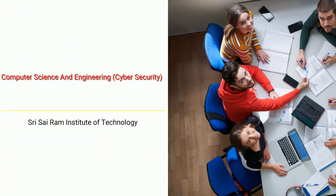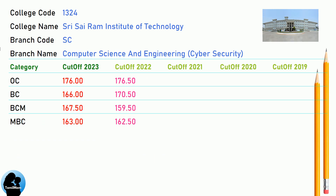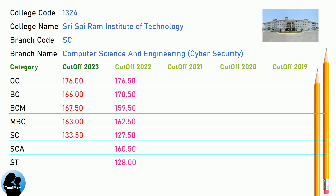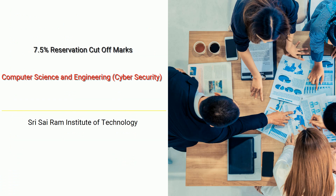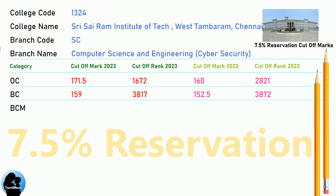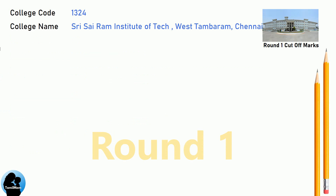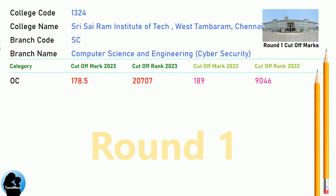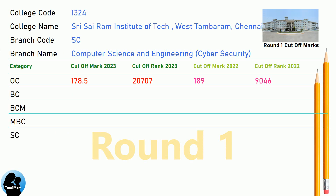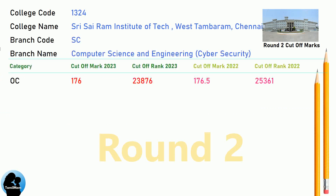BNA Cut-Off for Sri Sai Ram Institute of Technology in Computer Science and Engineering Cyber Security. DNA 7.5 Reservation Cut-Off for Sri Sai Ram Institute of Technology in Computer Science and Engineering Cyber Security. DNA Round 1 Cut-Off and DNA Round 2 Cut-Off for Sri Sai Ram Institute of Technology in Computer Science and Engineering Cyber Security.